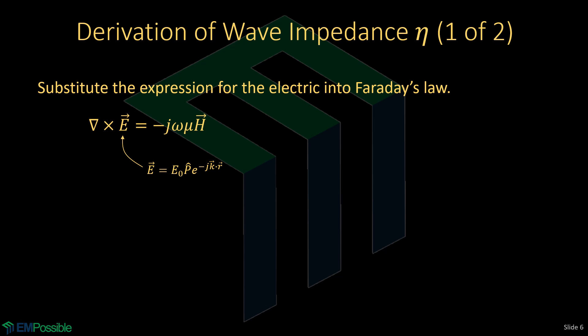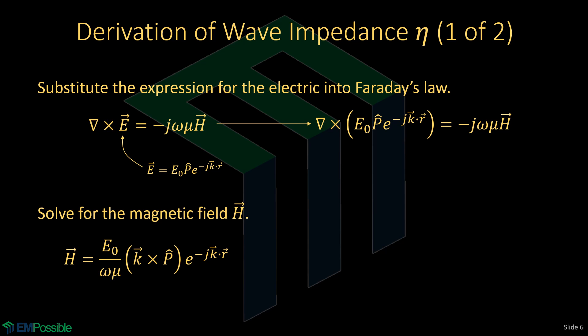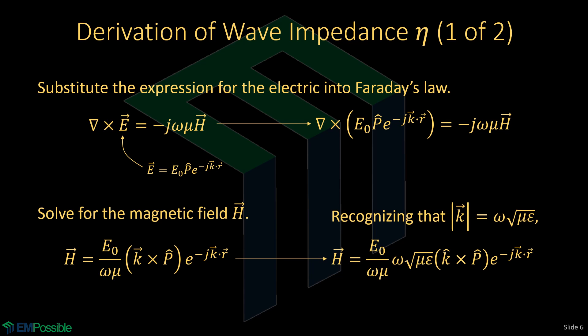Let's quickly show how to derive that expression for wave impedance. We start with Faraday's law and substitute into it the expression for the electric field component of a wave. From there, we solve for the magnetic field H and arrive at a new equation. We can recognize that the magnitude of the wave vector is omega times the square root of mu times epsilon. So we can write that as the magnitude of the wave vector multiplied by a unit vector in the direction of K. The magnitude is omega times the square root of mu epsilon, and the direction is this normalized wave vector, indicated by the carat over top instead of the arrow.